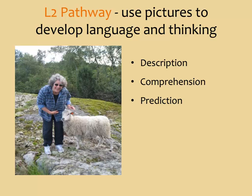You might predict that the sheep will bite her, or will run away, or that the person taking the picture is telling her 'enough already.' You could infer that it is not winter since the trees are green, or that neither she nor the sheep are afraid of each other since they are standing so close. If asked to explain why she is about to pet the sheep, you might guess that she is an animal lover or that she is far from home and misses her dog. If you knew the woman and her travel history, you might tap into this knowledge and infer the picture was taken in Finland where she had recently spent a year. Finally, you could evaluate what is going on in the picture: Is it a good idea for humans to get so close to wild animals? Should sheep be allowed to roam free on islands where people hike?